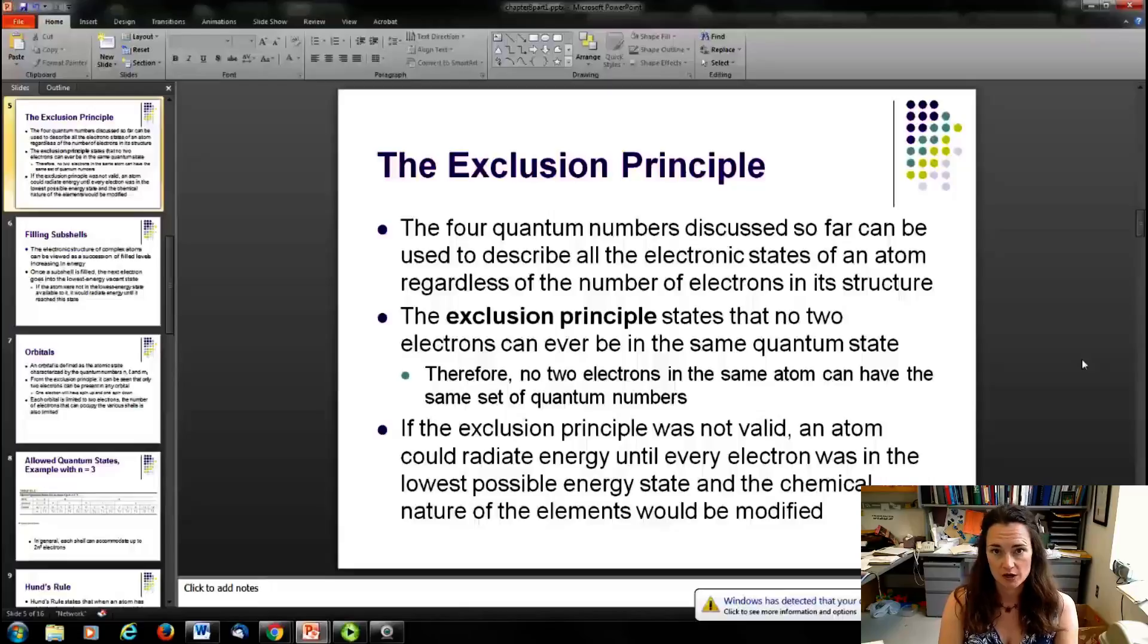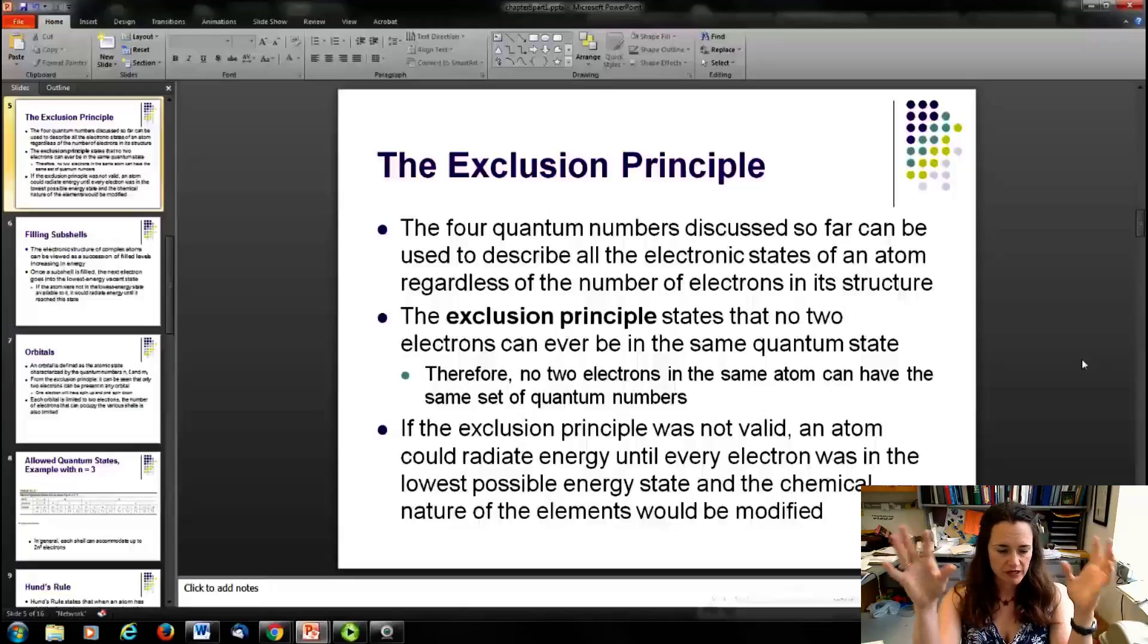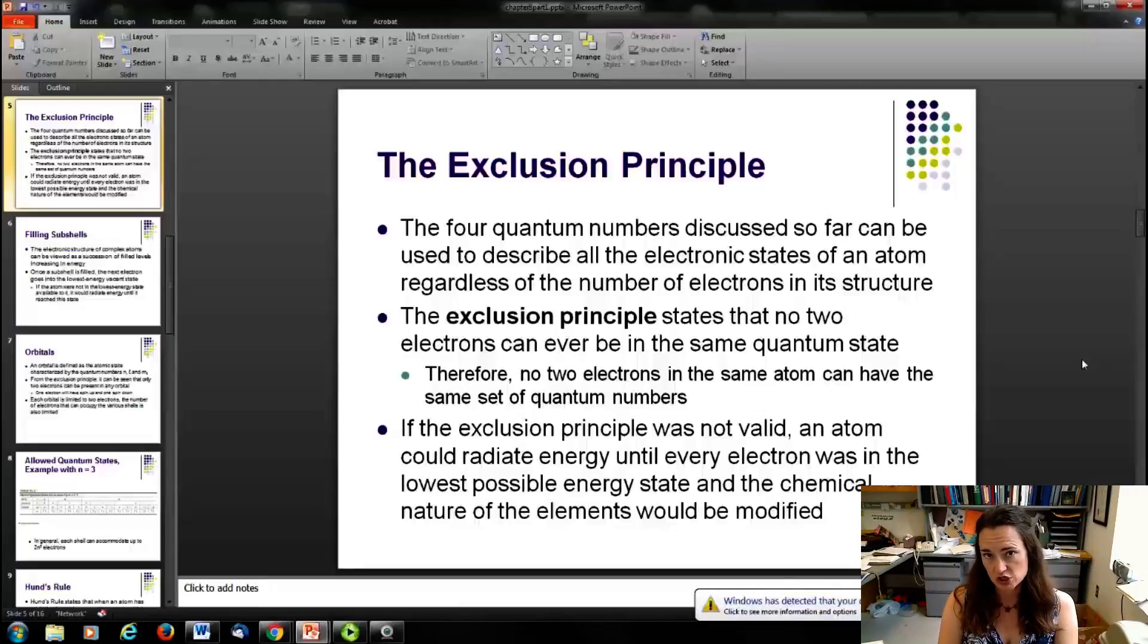Now, what would happen is, if the exclusion principle weren't valid, then all the electrons would just radiate all their energy away until they were in the 1s state and they could all occupy the same state. But that's not the way electrons work. We know now that all spin one-half particles, all fermions, obey the exclusion principle. Bosons, however, integer spin particles, do not obey the exclusion principle. And this leads to some pretty interesting statistics that we'll cover in a later chapter. It's the difference between Fermi-Dirac statistics, which describe fermions, and Bose-Einstein statistics, which describe bosons. But more about that later.